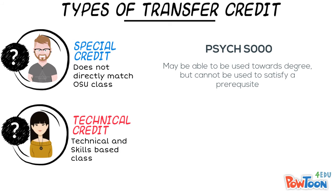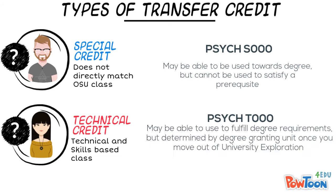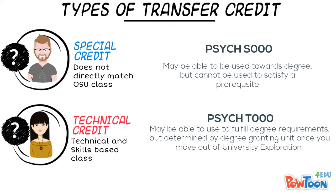Technical credits are identified as T000 on your transfer credit report. These credits are generally from specialized, technical skills-based courses. Whether or not you can use the credits to fulfill degree requirements will be determined by your degree-granting unit once you move out of University Exploration.